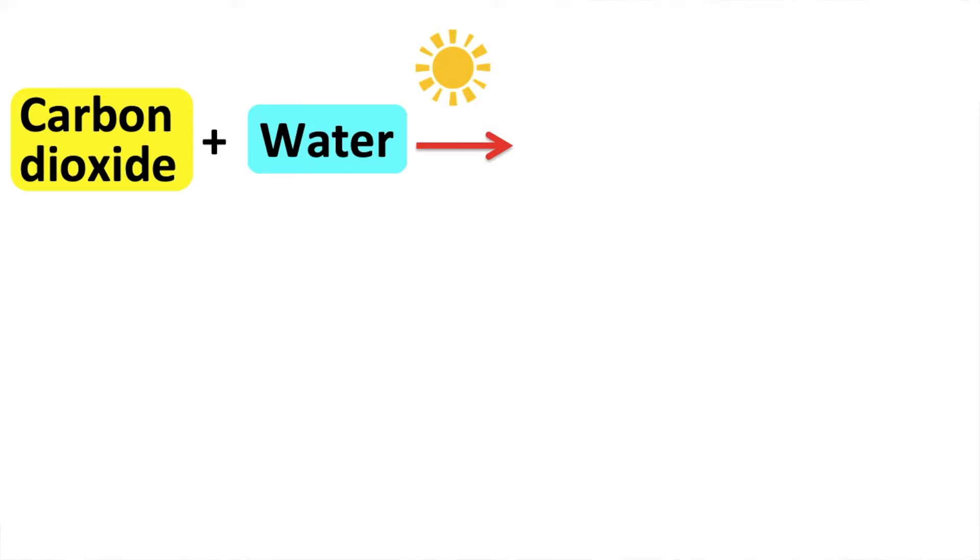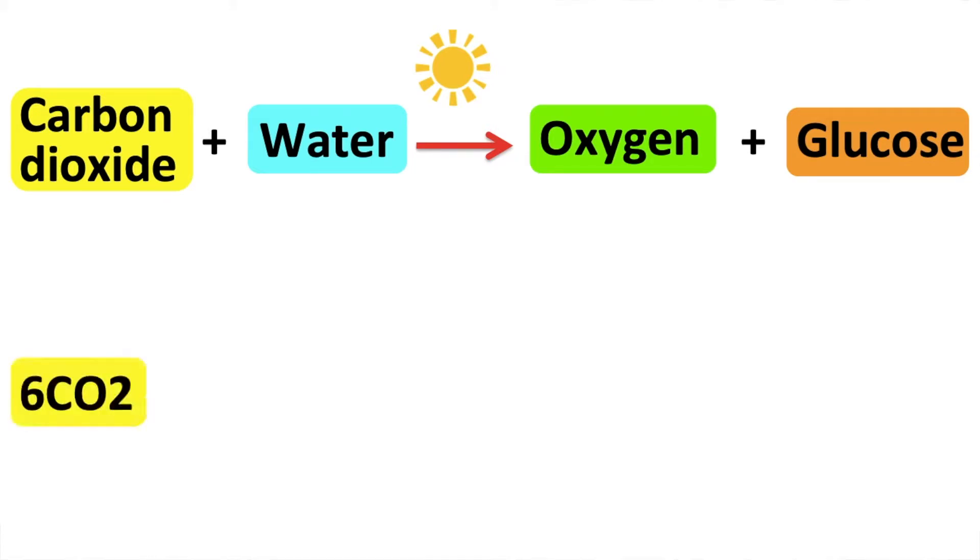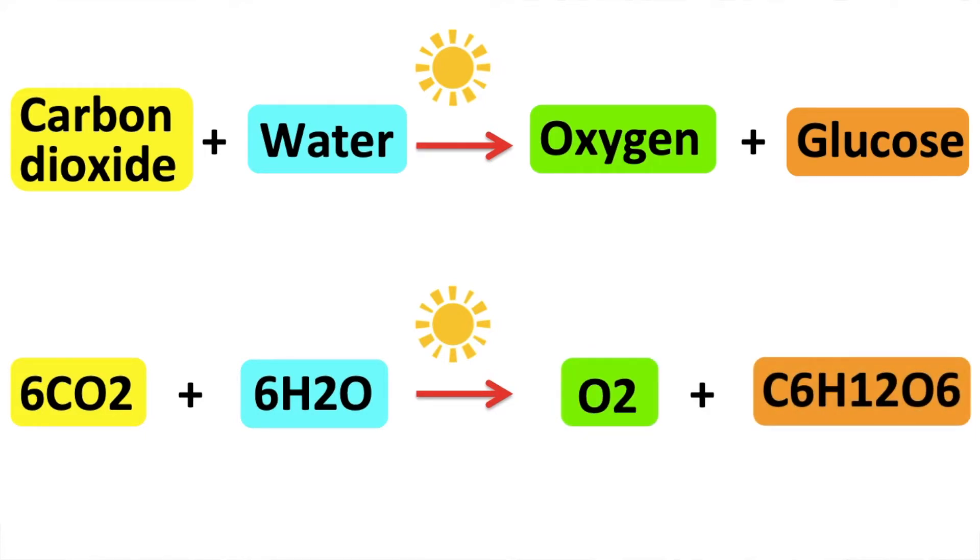This reaction produces oxygen and glucose. The formula for carbon dioxide is CO2. The formula for water is H2O. The formula for oxygen is O2. The formula for glucose is C6H12O6.